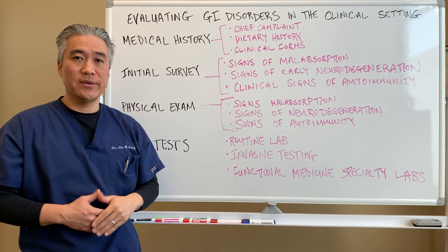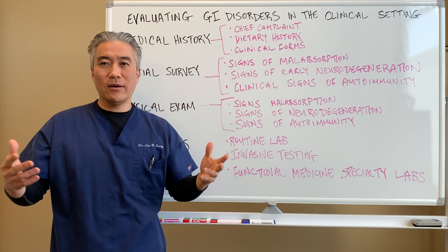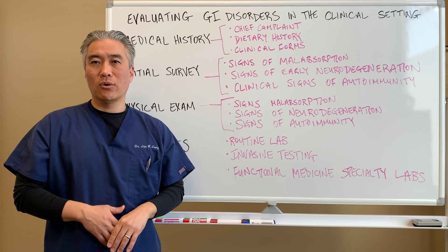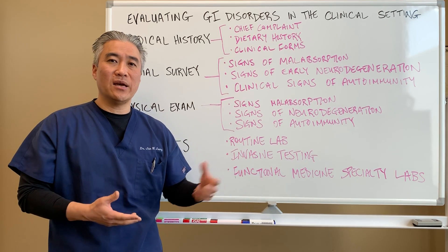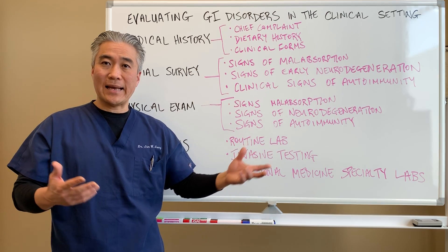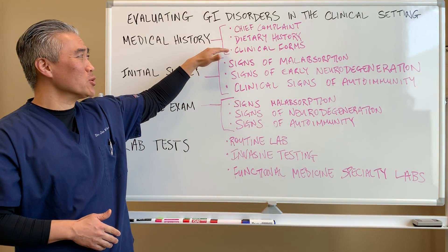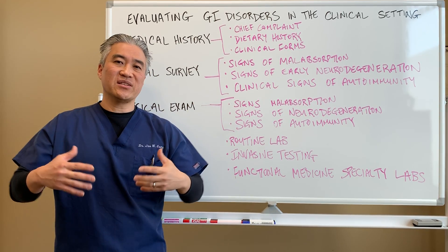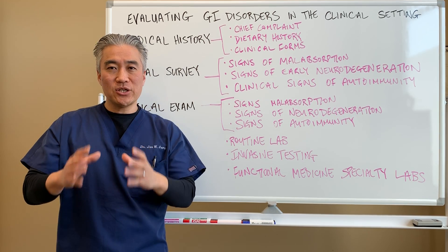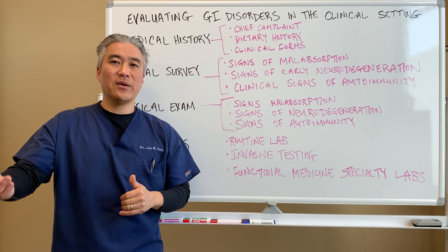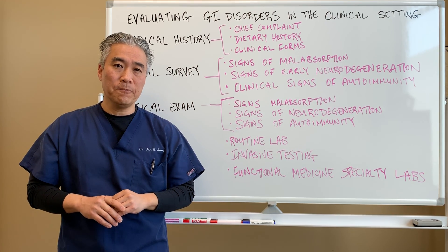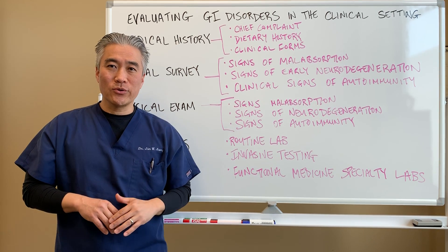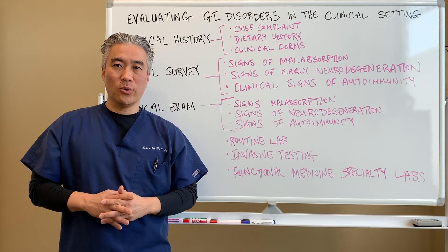Dietary history is obviously key — what is their diet like, do they eat at appropriate times and eat the right foods? Are they eating a lot of sugar or gluten, and they might not realize they have gluten sensitivity or celiac disease? We also use extensive clinical forms that patients fill out at home, which can take 30 to 45 minutes to an hour, because we have to ask all the necessary questions and leave no stone unturned.